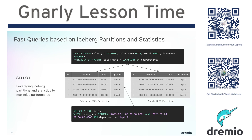Dremio can swap those Reflections in for particular queries without the user having to know about it — unlike materialized tables where you'd have to create many materialized tables and the user would have to know which one to use. Dremio handles all that intelligent decision-making, determining which Reflection should go with which query without the user having to think about it. You can use partition transforms to specify the partitioning logic in those Reflections. And now Dremio has a Reflection Recommender that monitors your query patterns and tells you which Reflections would benefit enough queries to make it worthwhile.